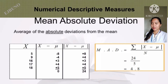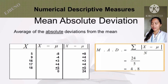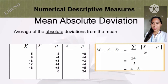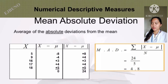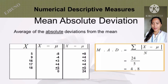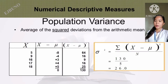Mean absolute deviation is the average of the absolute deviations from the mean. For the data set 5, 9, 16, 17, 18: x minus population mean gives negative 8, negative 4, plus 3, plus 4, plus 5, which sums to 0. The absolute values are 8, 4, 3, 4, 5, summing to 24. So MAD equals the summation of |x − population mean| over n equals 24 over 5, which equals 4.8.